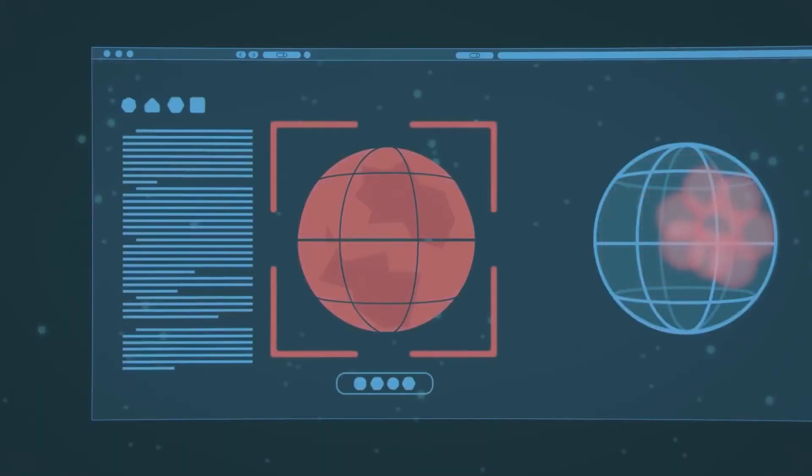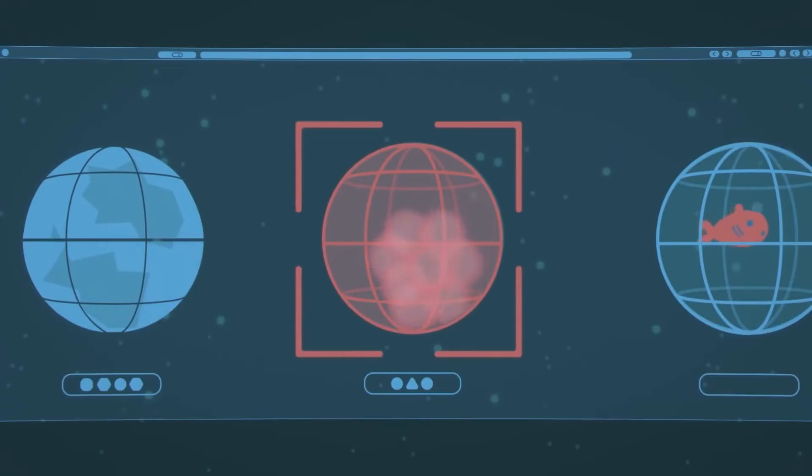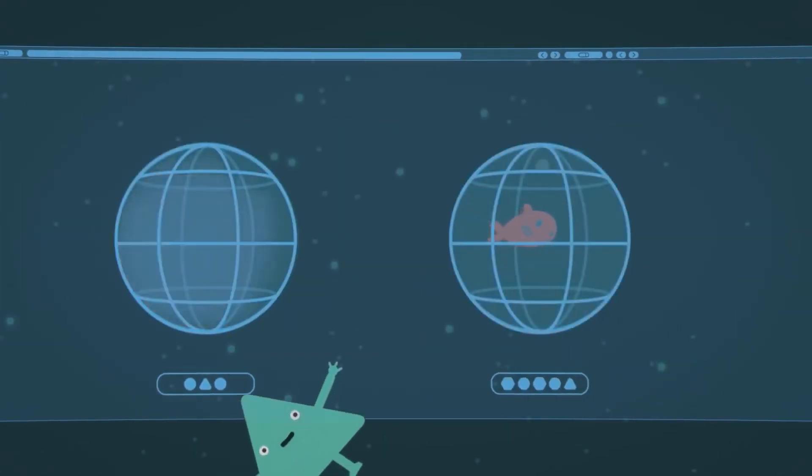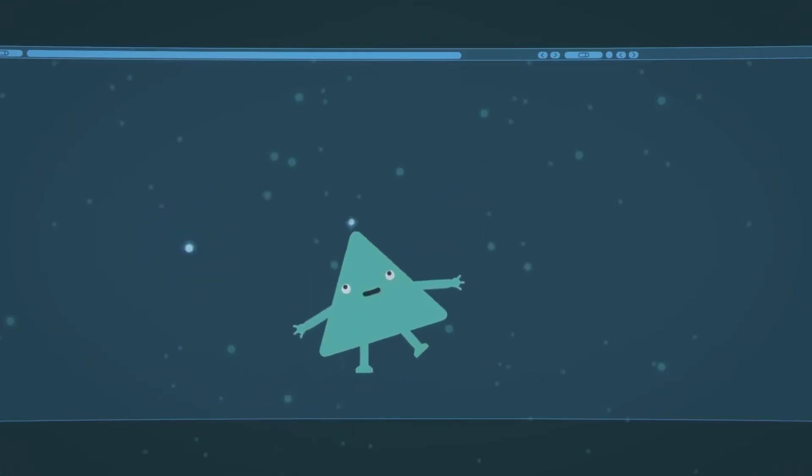Some planets are solid like ours, but some are made of things like gas or water, and they're all different. And from the ground, we can see some of the planets twinkling like stars.